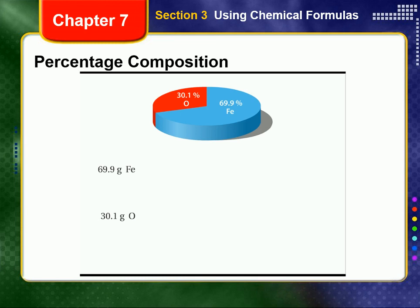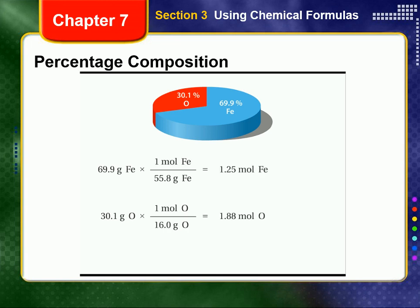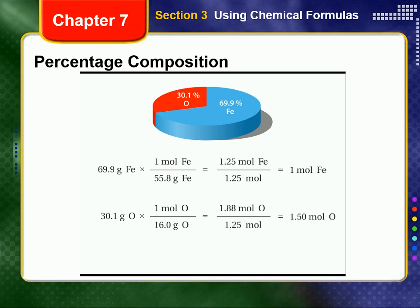For example, we discover that an unknown compound is 69.9% iron by mass and 30.1% oxygen. If we took a 100 gram sample of this compound, 69.9 grams of it would be iron and 30.1 grams would be oxygen. We can convert this to moles and divide both by the smaller number of moles. This gives us the relative proportions in moles. To find the simplest whole number ratio, we multiply by 2. The empirical formula for this iron compound is Fe2O3.